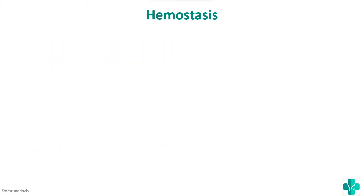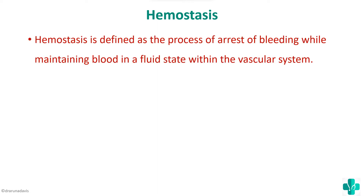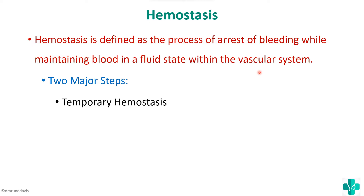When we start the answer, we have to begin with the definition of hemostasis. Hemostasis is defined as a process of arrest of bleeding while maintaining the blood in the fluid state within the vascular system. There are two major steps for hemostasis: the first is temporary hemostasis, otherwise called primary hemostasis, and the second is definitive hemostasis, or secondary hemostasis.